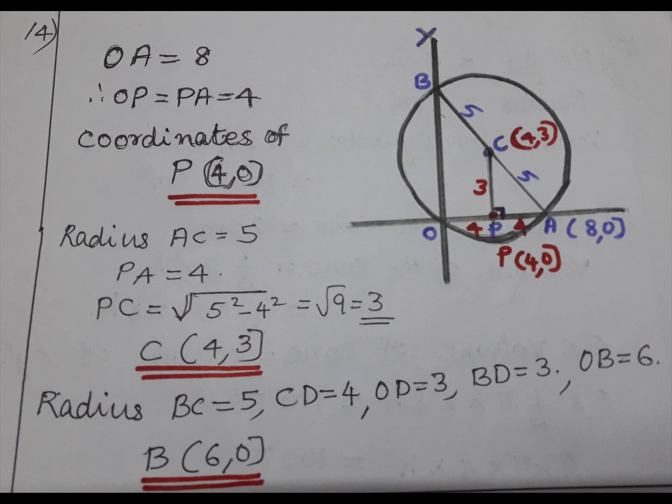Next, radius AC is 5. This triangle is APC. AP is 4, AC is 5. That is PC. Hypotenuse square minus 4 square.